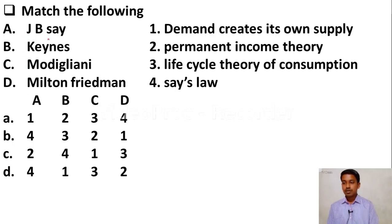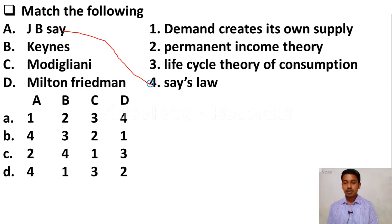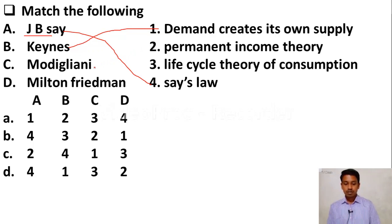Match the following: J.B. Say, Keynes, Modigliani, Milton Friedman — with: demand creates its own supply, permanent income hypothesis, life cycle theory of consumption, Say's Law. J.B. Say gave Say's Law — supply creates its own demand. J.M. Keynes criticised Say's Law and stated that demand creates its own supply. Permanent income hypothesis was given by Milton Friedman, and Modigliani gave the life cycle theory of consumption. Option D is the right answer.